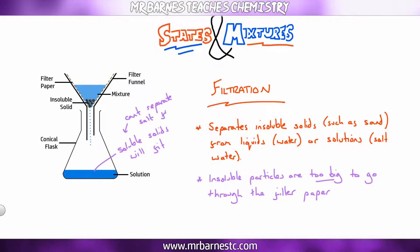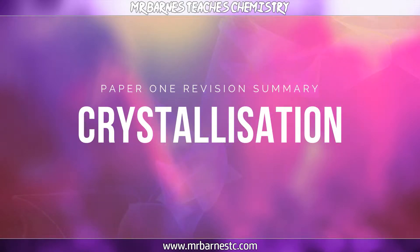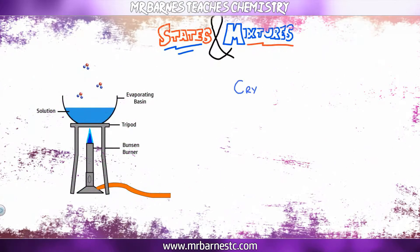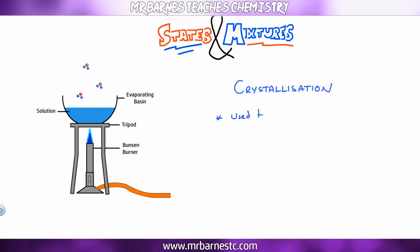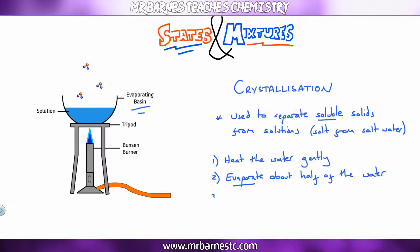Crystallization is used to separate soluble solids, for example salt or sugar, from salt or sugar water. All you need to do is evaporate off the water. You heat it up gently with the Bunsen burner, evaporate off about half of it, then leave it to cool. The rest of the water will evaporate off and leave your crystals behind.